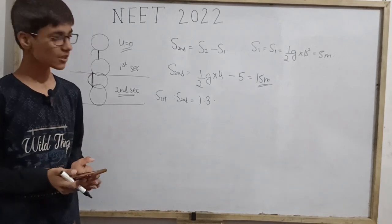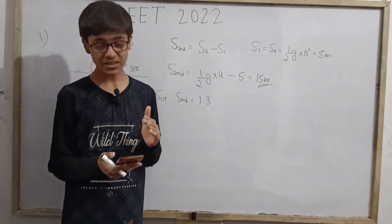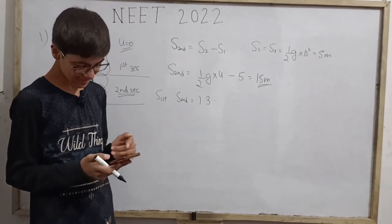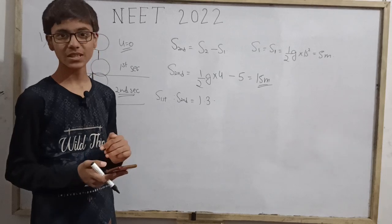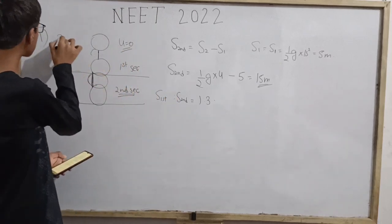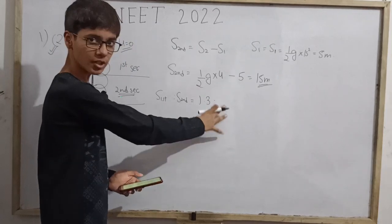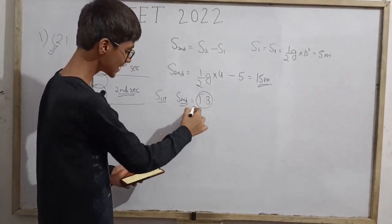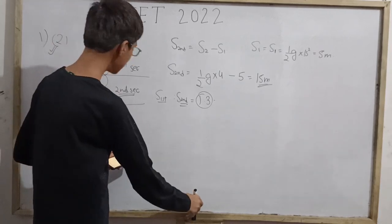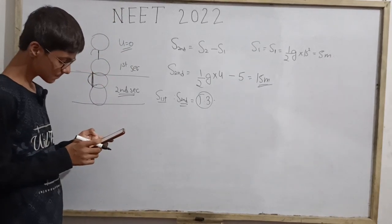Checking against the options — one is to four is to nine is to sixteen; one is to three is to five is to seven; one is to one is to one; one is to two is to three. Since the first two terms give 1 to 3, only one option matches, and we can confirm the correct answer is the second option: 1 is to 3 is to 5 is to 7.